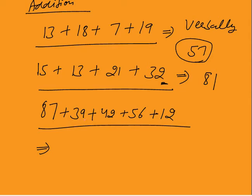Now, 87 plus 39: first add 87 plus 40, which is 127, minus 1 gives 126. Now 126 plus 42: add 126 plus 2 to get 128, plus 40 gives 168. 168 plus 56: 168 plus 6 is 174, plus 50 is 224. 224 plus 12 gives the answer 236.